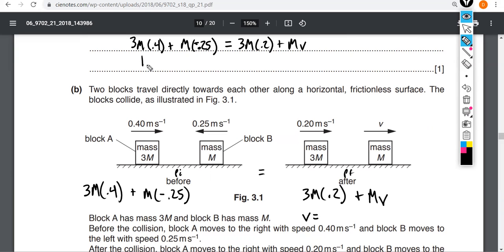3m times 0.4 is 1.2m. Negative 0.25 times m is negative 0.25m. And here's where the sign convention can really lead you down the wrong path. If you're not mindful that this velocity is negative, or you're not mindful that the momentum of this object is negative relative to this momentum, then here you're going to add these and get like 1.45 and then the incorrect solution. So the correct way to add these momenta is to recognize that this is negative relative to that.